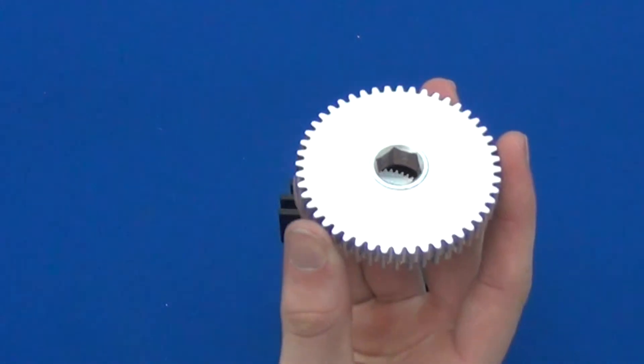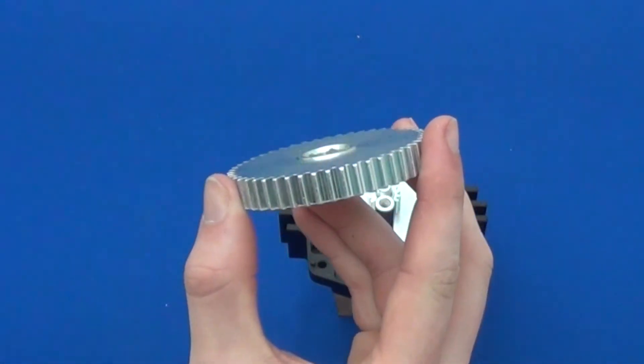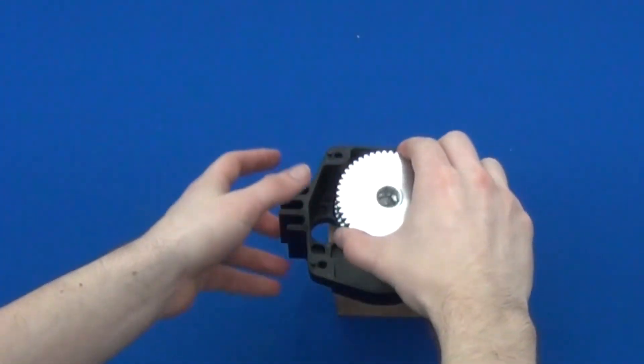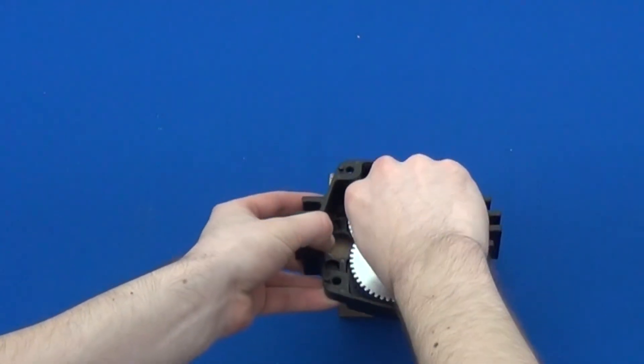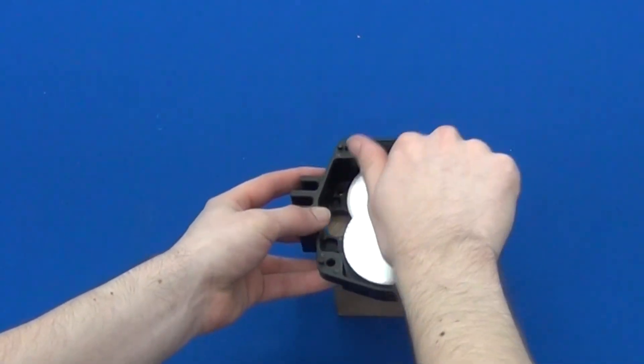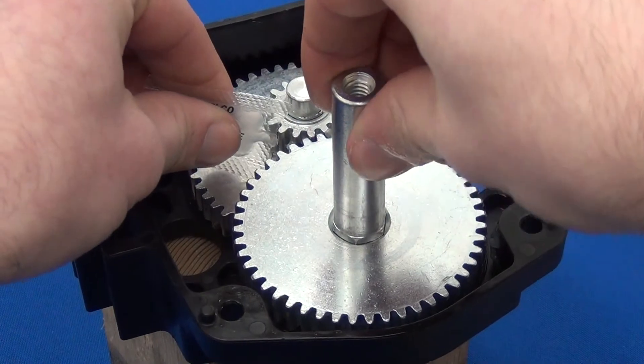Remember that other large gear we talked about earlier? Now we want to go ahead and grab that. Remember the boss we talked about earlier as well? We want to make sure it's facing up. Now that we have all the gears in place, grab the grease packets from the kit and apply the grease evenly within the gears.